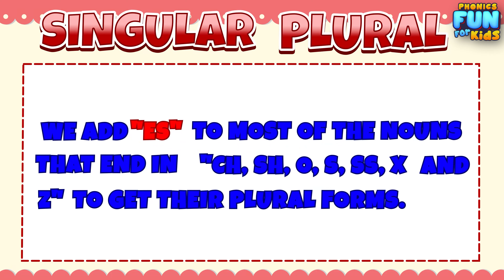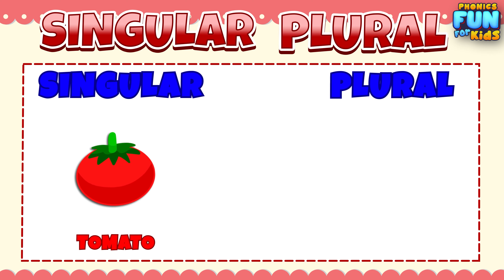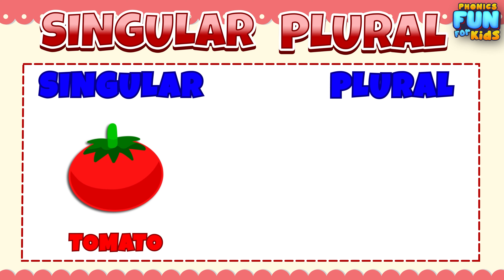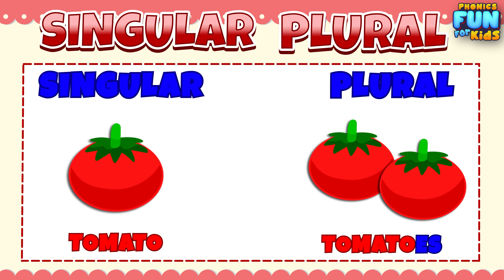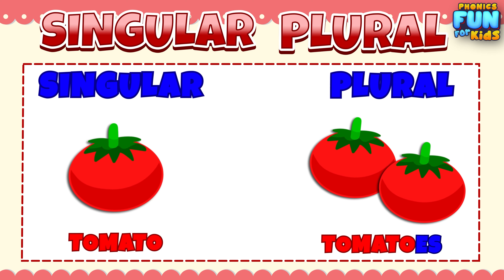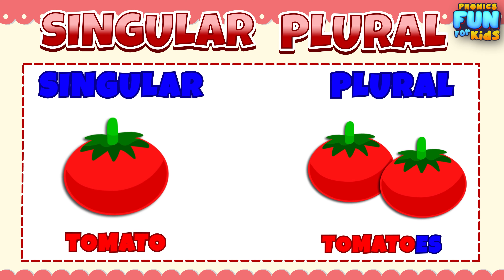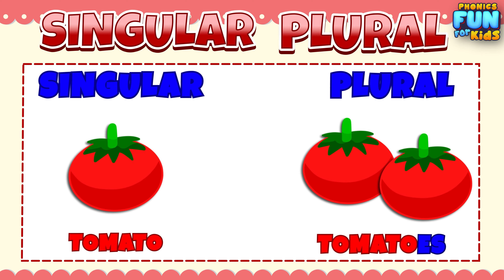We add ES to most nouns that end in CH, SH, OS, SS, X, and Z to get their plural form. For example: tomato, tomatoes.